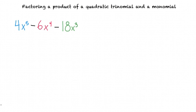The first thing we should do is check to see if there's a greatest common factor of each of these terms. How would we do that? First we'll break down these coefficients into prime factorizations and we'll expand these exponents with our variables into repeated multiplication. Something like this.